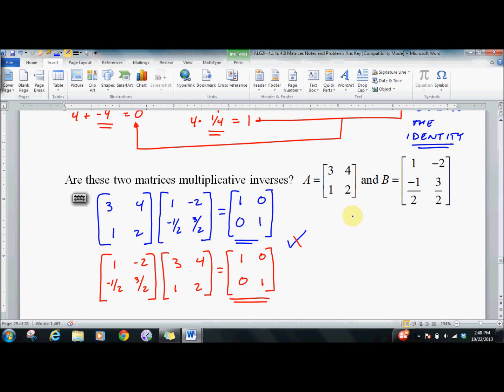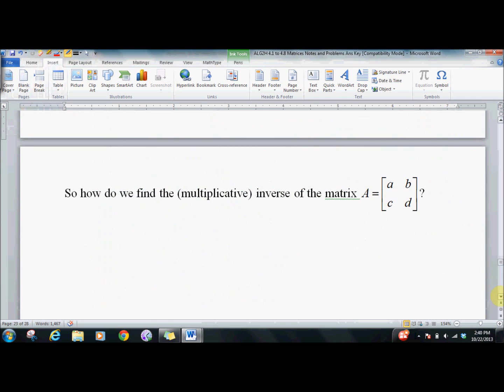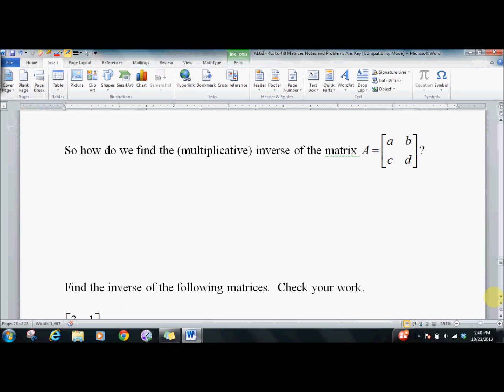So these two are multiplicative inverses. And from here on out, whenever we say inverses, we just mean multiplicative inverses for matrices. Finding an additive inverse for a matrix is pretty straightforward stuff. So how do we find the actual multiplicative inverse? Given [a, b; c, d], it's weird.